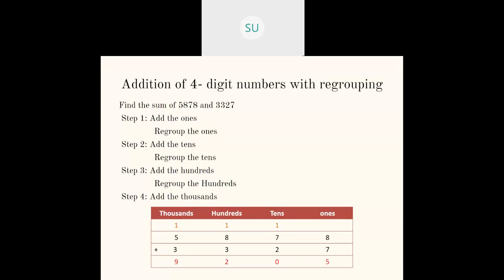Then you'll have learned addition of four-digit numbers with regrouping. Regrouping means that in any particular place value — for example ones — you cannot write a number greater than nine. You cannot write a two-digit number in any of the places. So when you add two numbers and get a number greater than nine, you regroup those numbers. Here we have nine plus one which is ten, so we write zero in ones place and carry over one to the tens place.